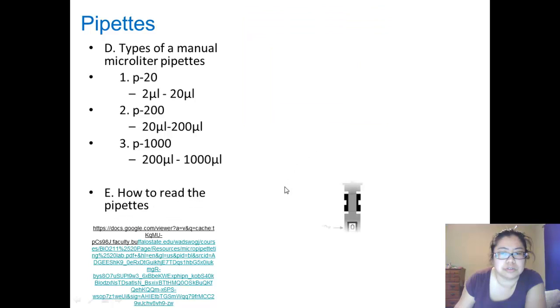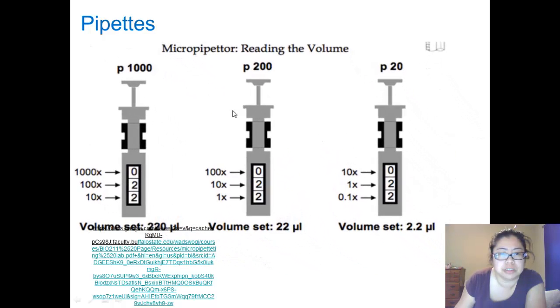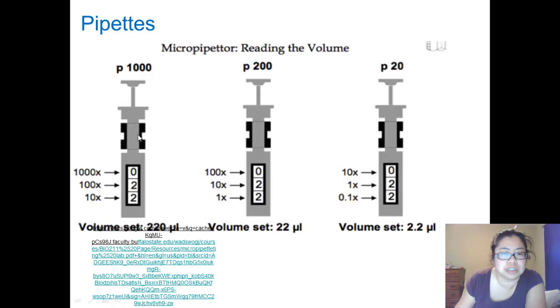So how do you read pipettes? Over here we have an example. Here is the 1,000 microliters capacity. The first digit is going to be the 1,000s place, then 100s, and then the tens place. So remember it goes from 200 to 1,000.